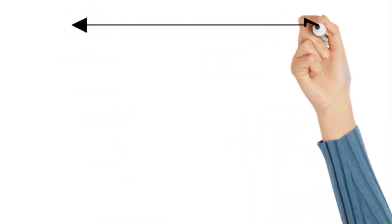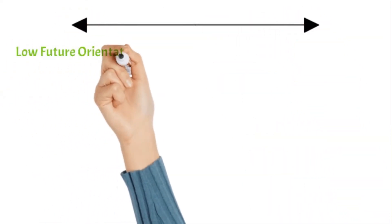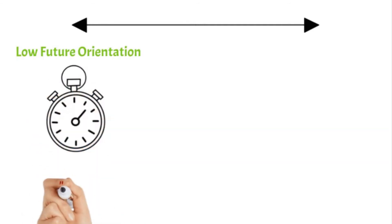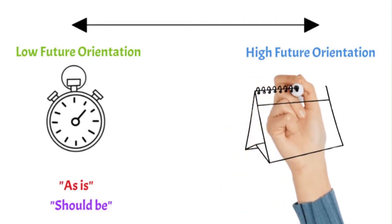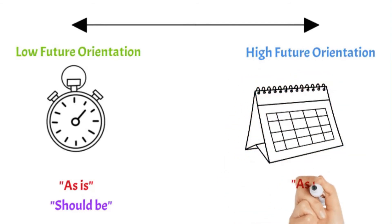Future orientation is the extent to which individuals engage and should engage in future-oriented behaviors, such as delaying gratification, planning, and investing in the future.